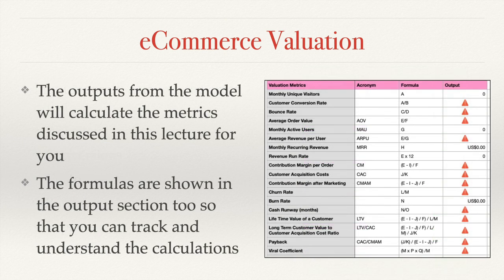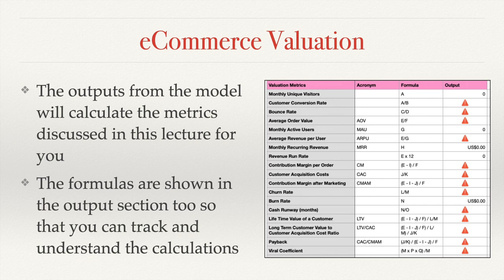The outputs from the model — don't worry about the triangles because I haven't put any content into the model so it's blank, but that's where the formulas are. The outputs will calculate the metrics discussed in this lecture. I've shown you the acronyms and the formulas so you can see exactly where the data is coming from and track the calculations. The spreadsheet will enable you to calculate all of this very straightforwardly by just putting in the inputs we've just explained.